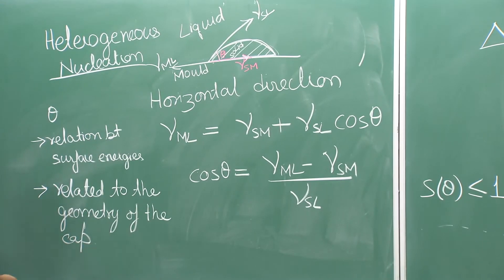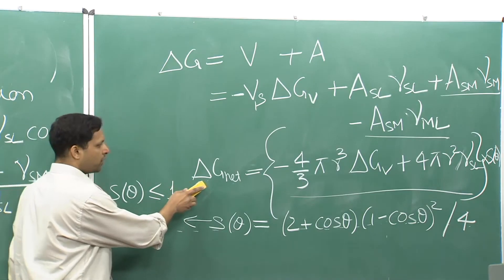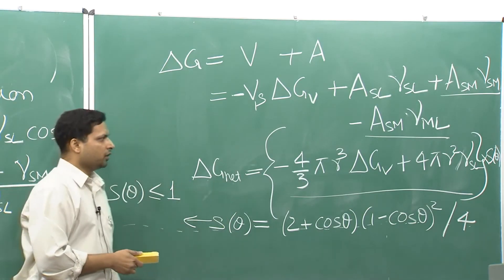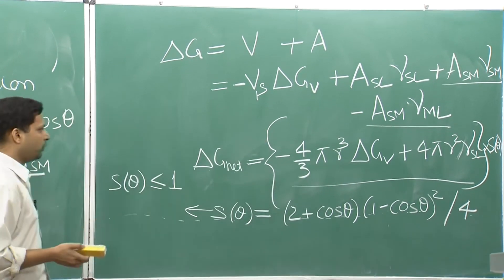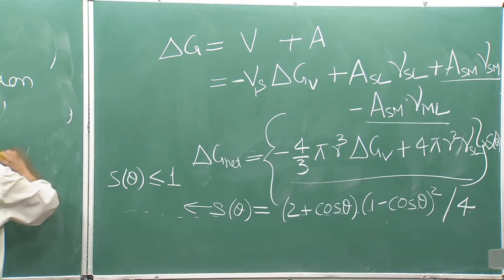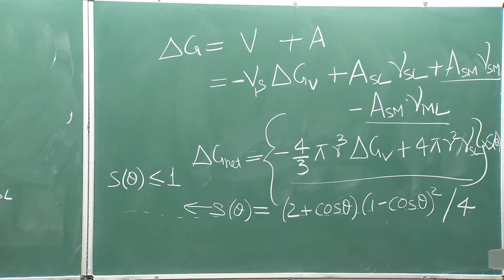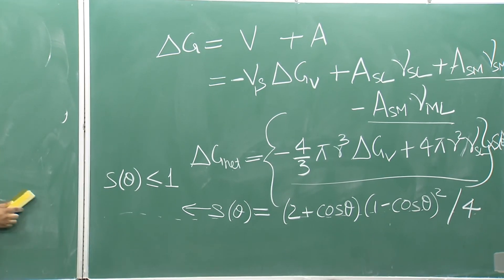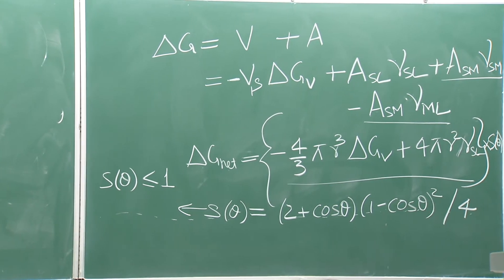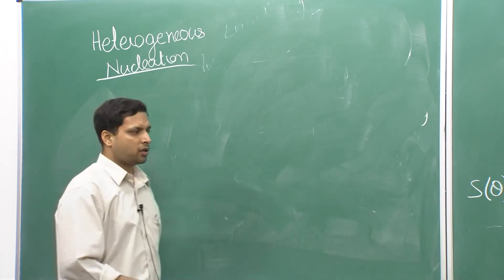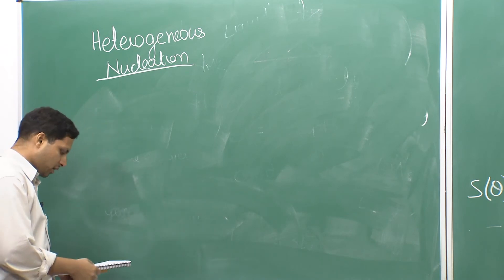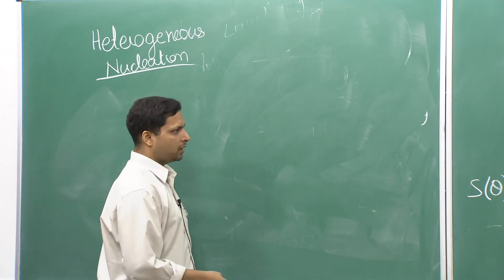That is the form of ΔG_heterogeneous — the overall change in energy for any radius r. We have not yet talked about the critical radius. To find it, we differentiate this equation with respect to r and equate it to zero to find the maximum, giving r*. Substituting r* back gives ΔG*.